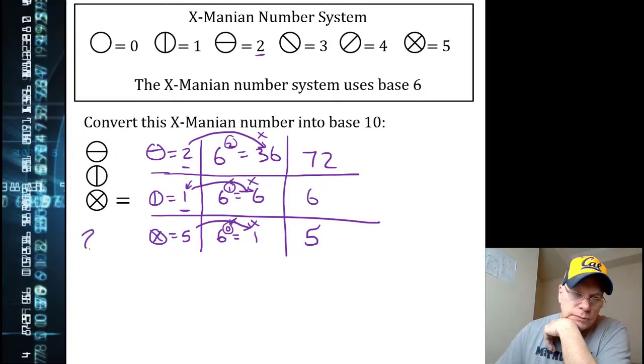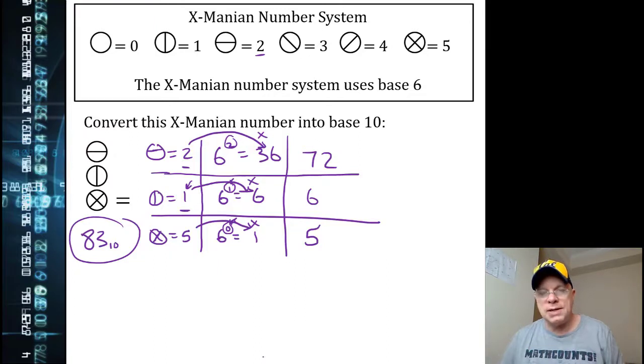So the value of this alien number in base 10 is 83. There's something also interesting to think about when you see that that value 83 can be written using two digits in our number system, and yet in the alien number system it requires three digits.